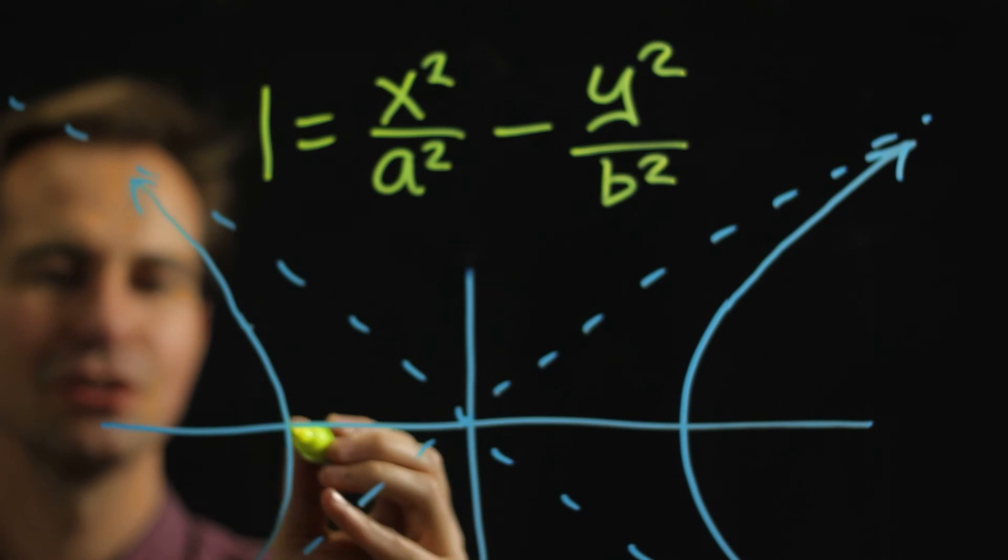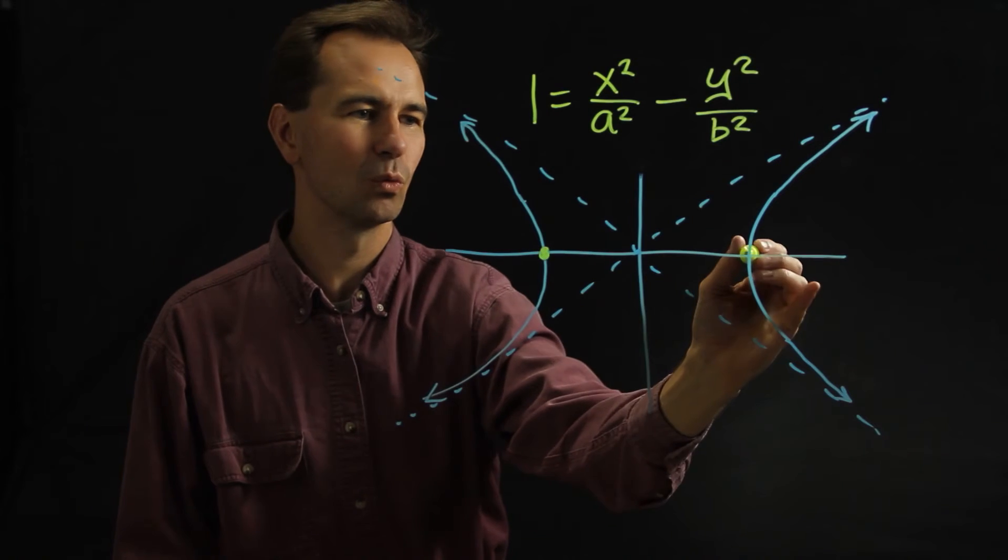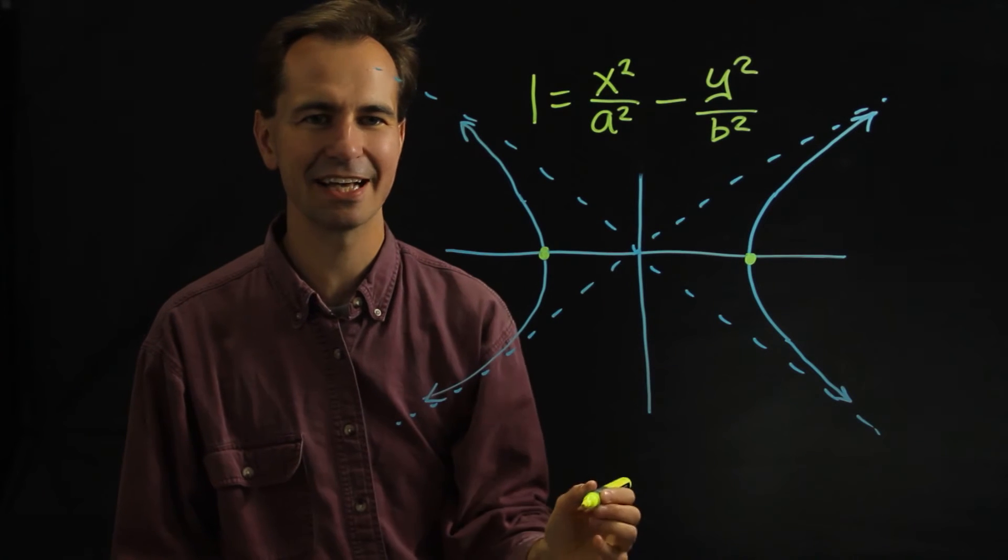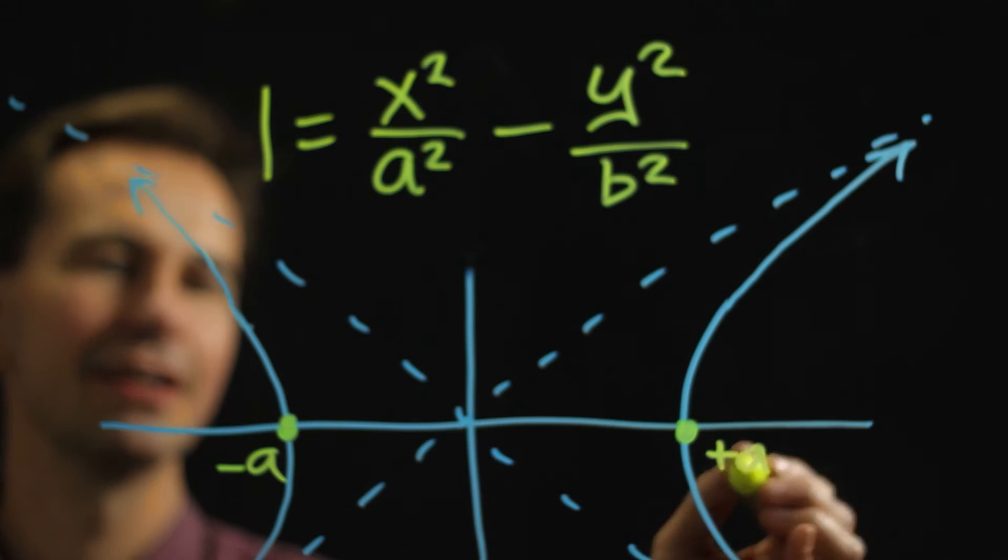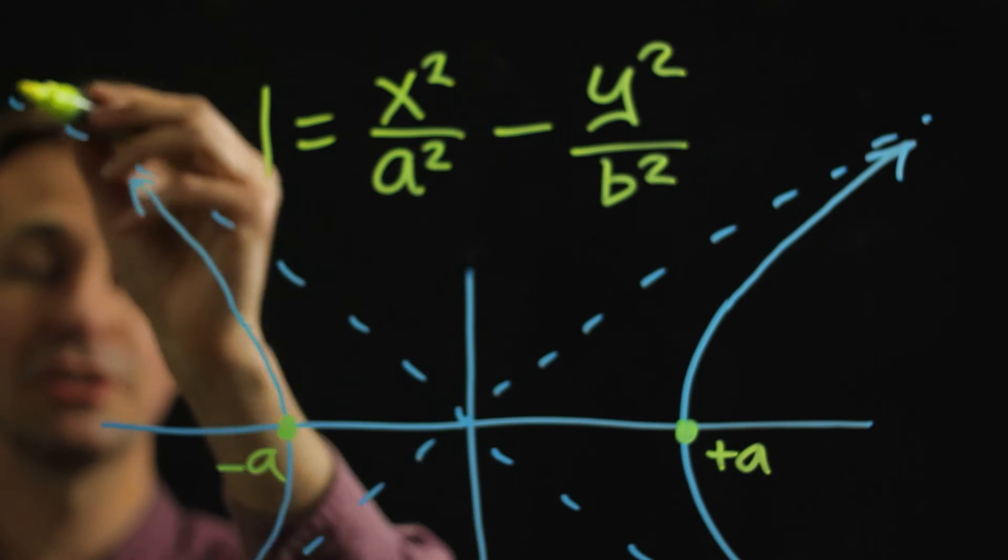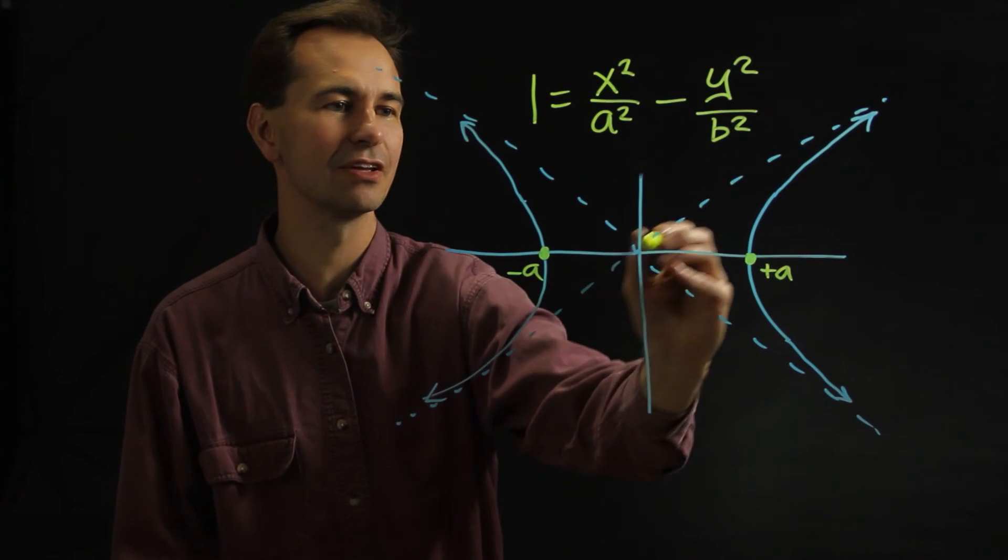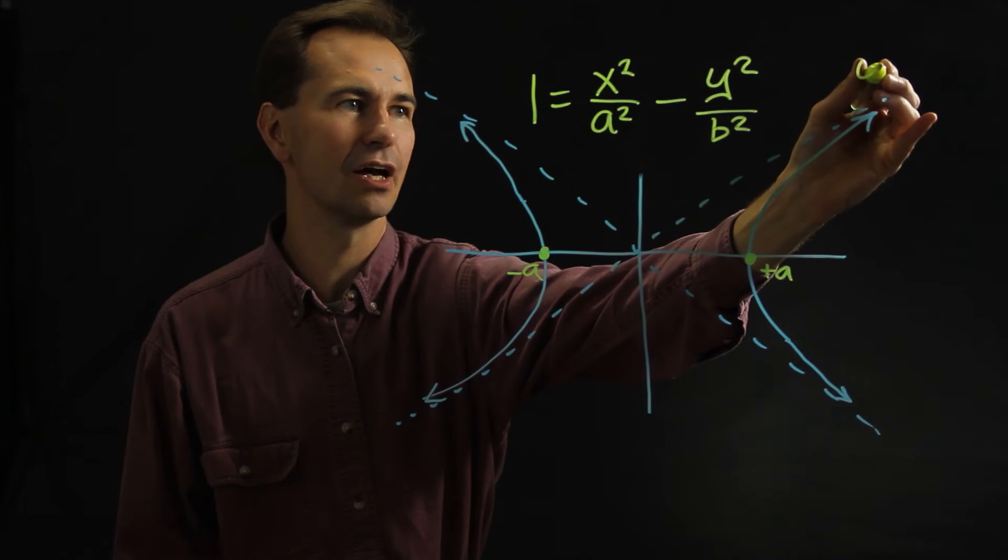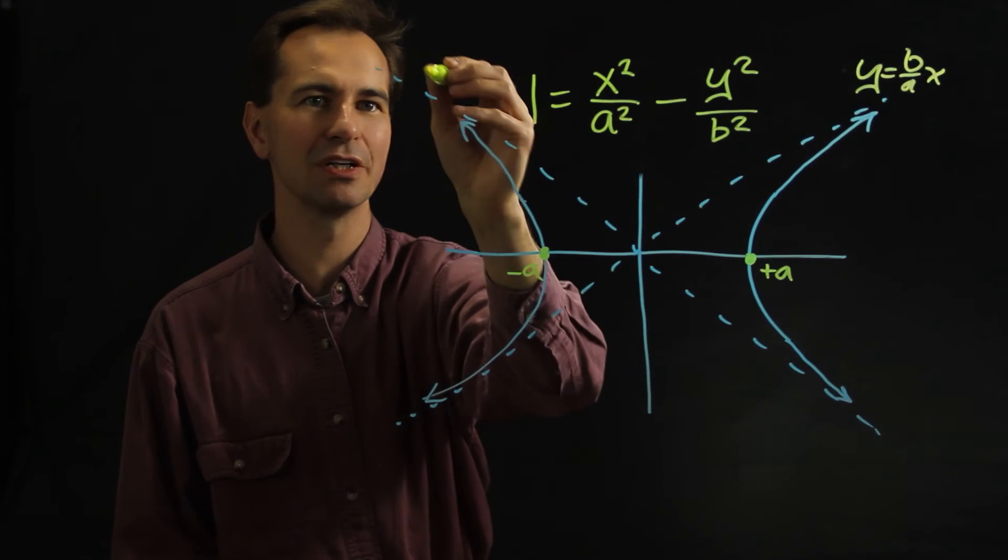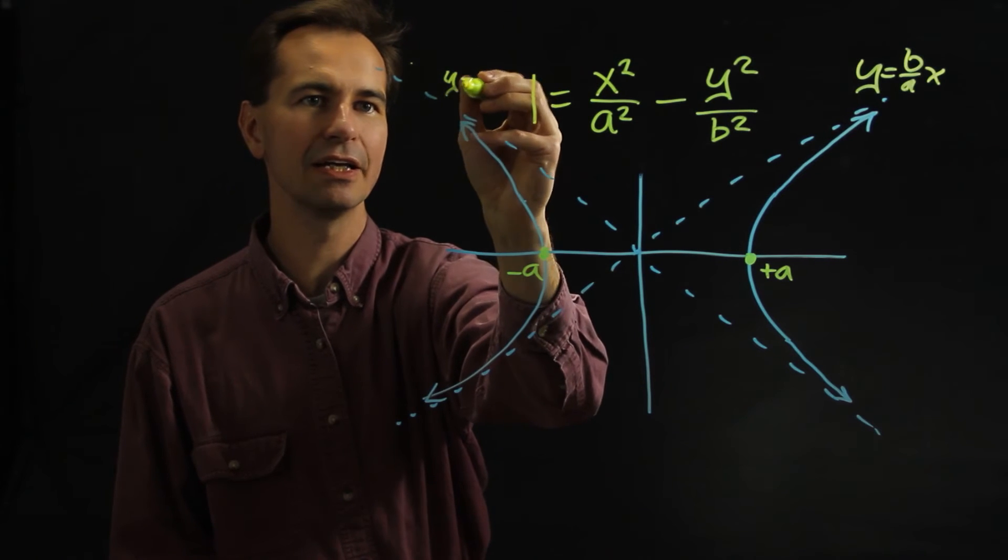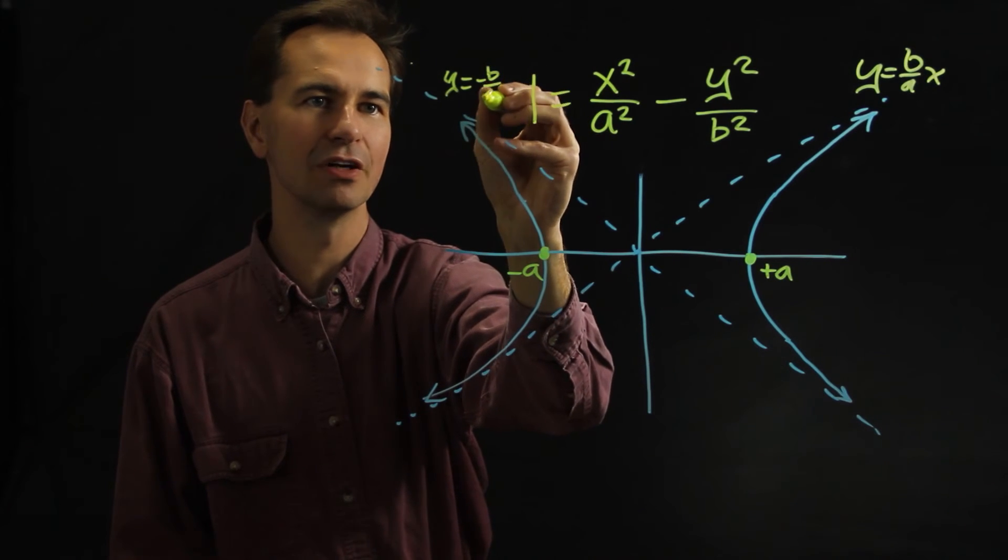And this a it turns out tells you where the hyperbola hits the x-axis. Hits it here at negative a or here at positive a. And the a and b also tells you where the asymptotes are. It turns out that this asymptote is the line y equals b over a x. And this one is y equals negative b over a x.